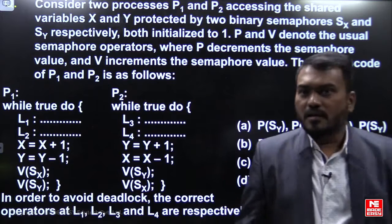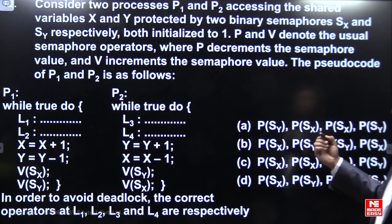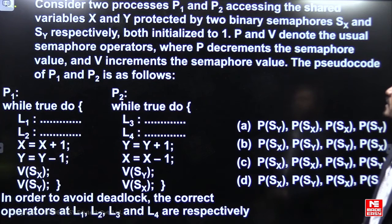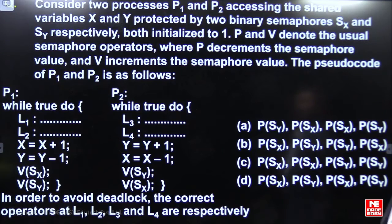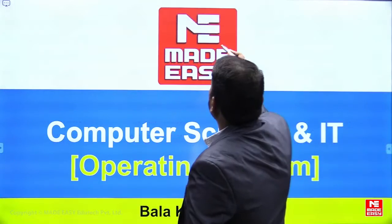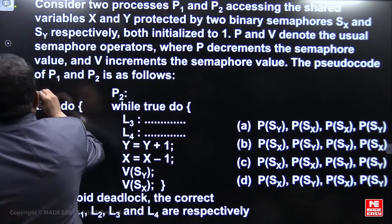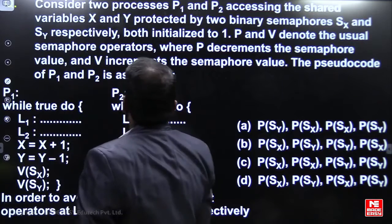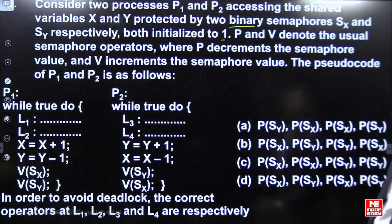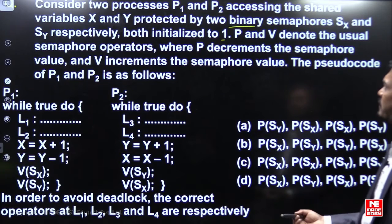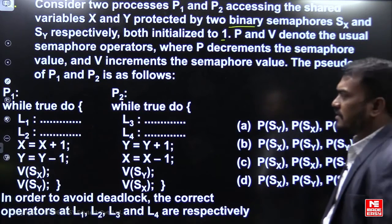Consider two processes P1 and P2 accessing shared variables X and Y, protected by two binary semaphores SX and SY respectively, both initialized to 1. P and V denote the down and up operations on binary semaphores, and the pseudocode for P1 and P2 is given as follows.